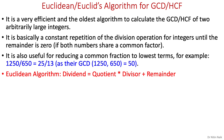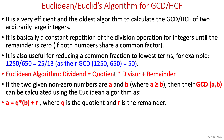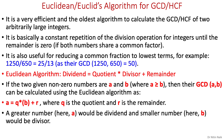The Euclidean algorithm is: dividend equals quotient times divisor plus remainder. If the two given non-zero numbers are a and b where a is greater than or equal to b, then their GCD can be calculated as a equals q times b plus r, where q is the quotient and r is the remainder. Here we always consider the greater number as dividend and the smaller number as divisor.